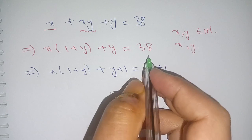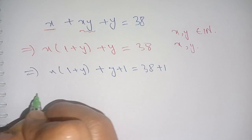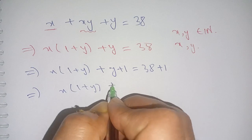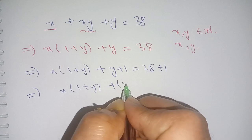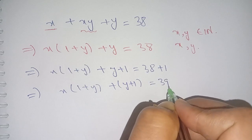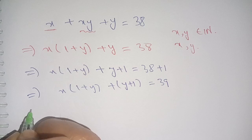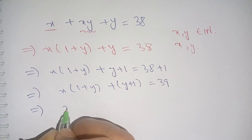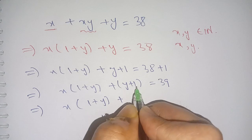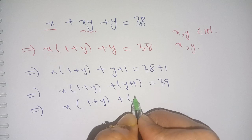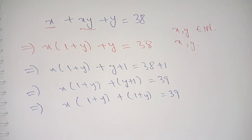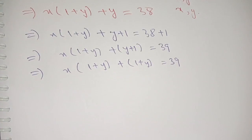Adding 1 to both sides doesn't impact our previous equation. We get x times (1 plus y) plus (y plus 1) is equal to 39. In the next step, we can write (y plus 1) as (1 plus y), so we have x times (1 plus y) plus (1 plus y) is equal to 39.